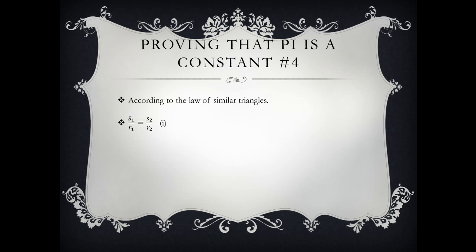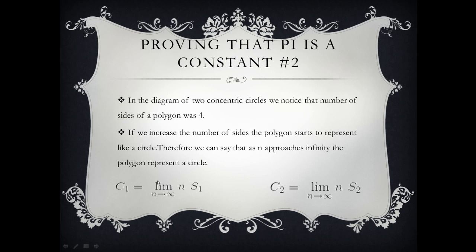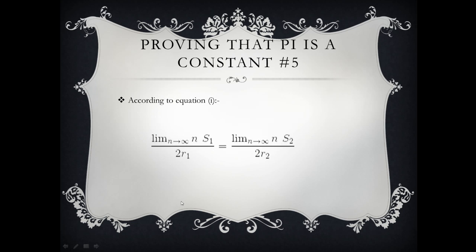So according to the law of similar triangles you can say that S1 over R1 is equal to S2 over R2. And we name that as equation 1. According to equation 1 we can just say that. And you might notice that this thing is actually this thing over here. So you can replace that with C1 over its diameter and C2 over its diameter.